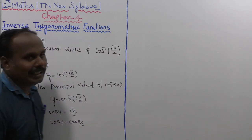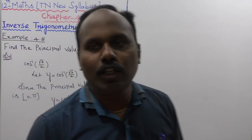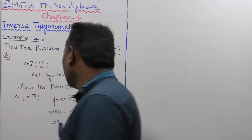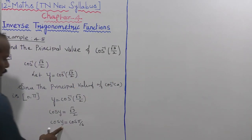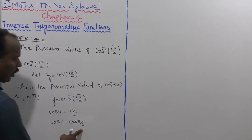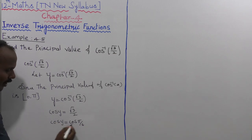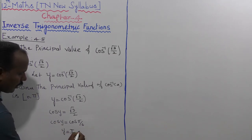That is called 30 degrees. cos 30 degrees is equal to root 3 divided by 2. So let us consider cos y is equal to cos π by 6. The cos cancels, and then y is equal to π by 6.